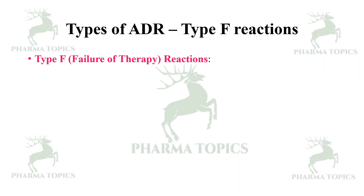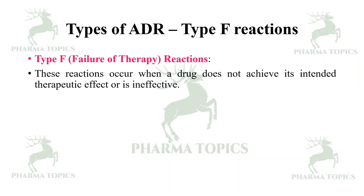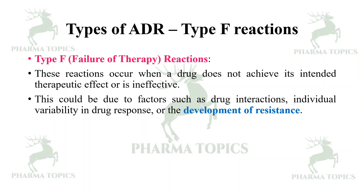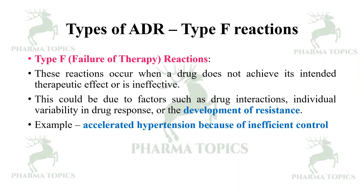Next is Type F reactions. Type F, or failure of therapy reactions, occur when a drug does not achieve its intended therapeutic effect or is ineffective. This could be due to factors such as drug interactions, individual variability in drug response, or the development of resistance. An example is accelerated hypertension due to inefficient blood pressure control.